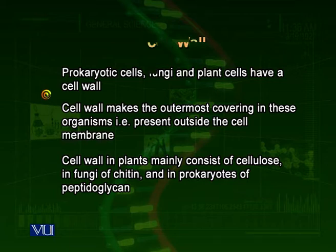The fungal cell walls consist of another type of polymer called chitin. In contrast, the cell walls of the prokaryotes consist of another fibre which is a polymer of amino acids — different types of amino acids and sugars. This is called peptidoglycan.